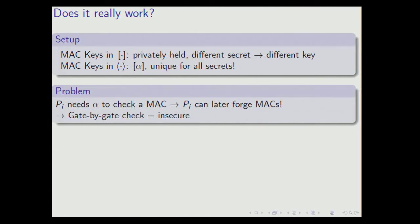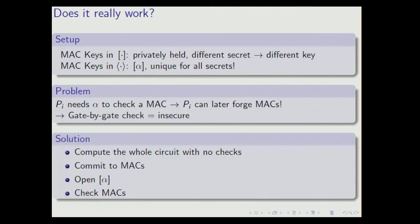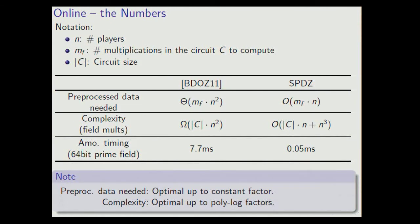So the solution we came up with was the following. We compute everything securely until the opening phase. We let players commit to their MACs, open the master key, and then check the MACs. And since the opening is after the commitment of the MACs, adversaries cannot really cheat. This gives us an improvement on the preprocessed data needed, and also an improvement on the complexity of the protocol. Practically, we also have a very nice improvement — basically two orders of magnitude. And we have a theorem stating that our online phase is essentially optimal in your favorite measure.